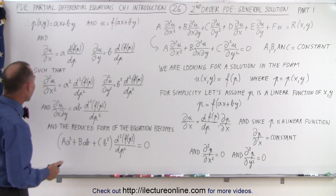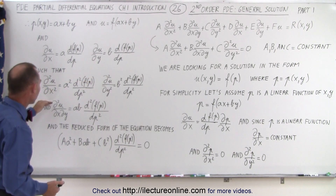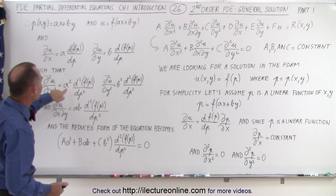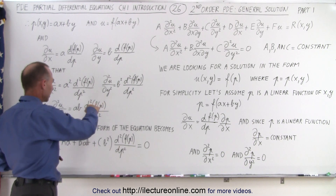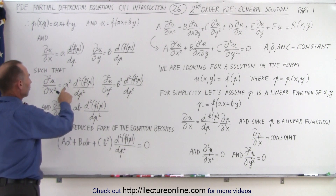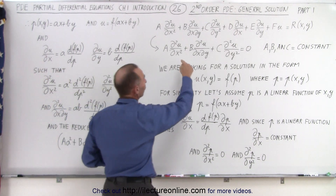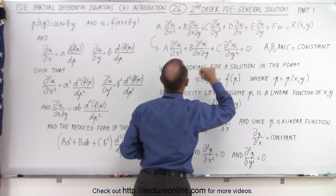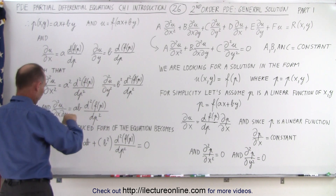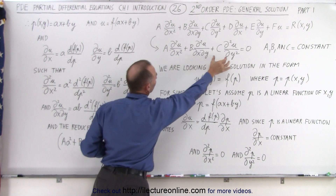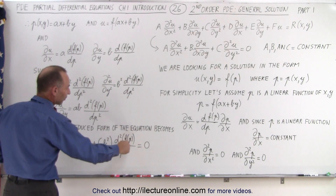If we take the second derivative of u with respect to x, the second derivative of u with respect to y, and the second derivative of u with respect to x and y, we get: a squared times the second derivative of the function with respect to p; b squared times the second derivative of the function with respect to p; and a times b times the second derivative. Then we take this form of the equation and make substitutions for those three terms, and we can factor out a common d²/dp² of the function of p.